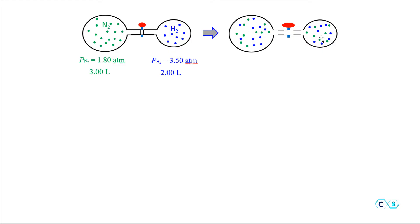Each gas is going to have a partial pressure, and in order to find the final pressure we need to add these two pressures together. We cannot take the initial pressures — 1.8 atmospheres and 3.5 atmospheres — and add them together, because in addition to the pressure change, we also have a change in volume. If we had the same container and were mixing gases together, we could just add the pressures using Dalton's law of partial pressures, but we cannot do that here because the volume is also changing.